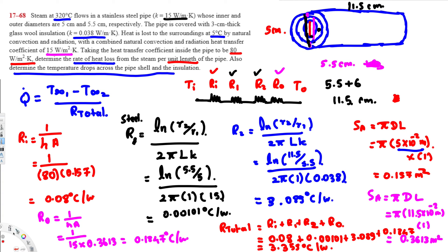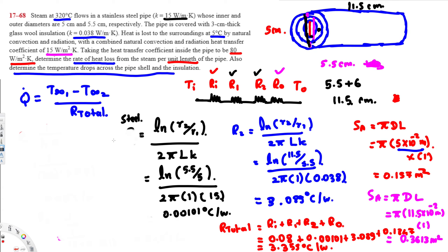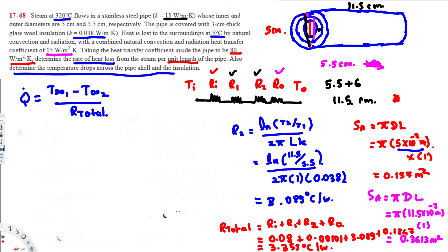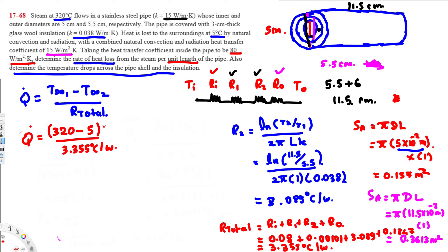Now we can find Q_dot. Using Q_dot = (T_infinity_1 - T_infinity_2) / R_total = (320 - 5) / 3.355 = 93.9 watts. That answers the first question: the rate of heat loss from the steam per unit length is 93.9 watts.